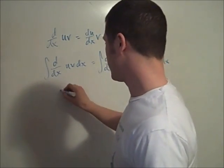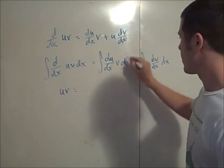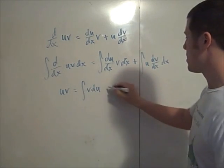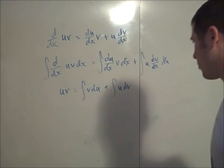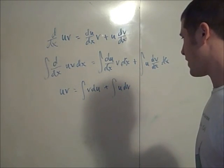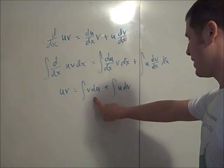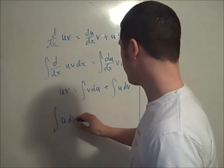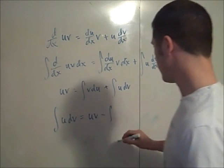This is uv. Here, this is v du. This is integral v du. This is integral u dv. Now, if we subtract integral of v du from both sides, then what we're left with is the integral of u dv is uv minus integral, minus the integral of v du.